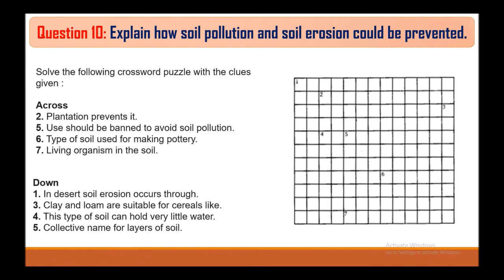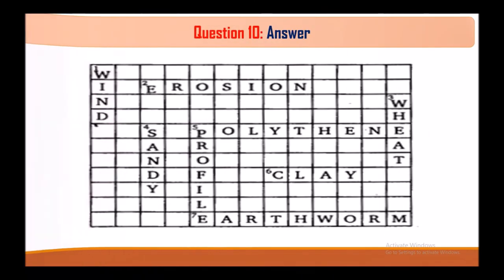Question 10: Solve the crossword puzzle. Across answers: erosion, polythene, clay, and earthworm. Down answers: wind, sand, profile, and wheat. Clues include: plantation prevents it; types of soil used for making pottery; living organisms in the soil; in desert, soil erosion occurs through wind; clay and loam are suitable for crops like wheat.